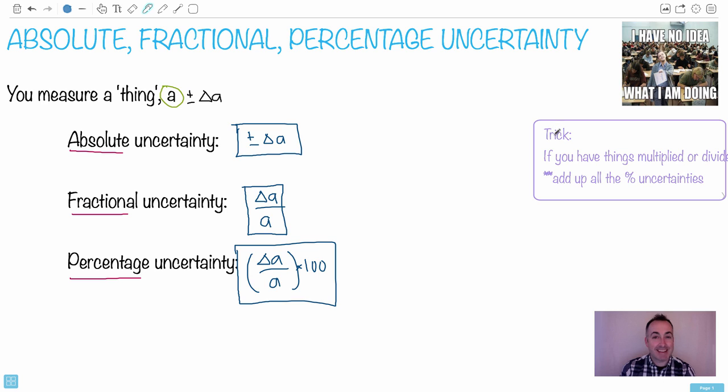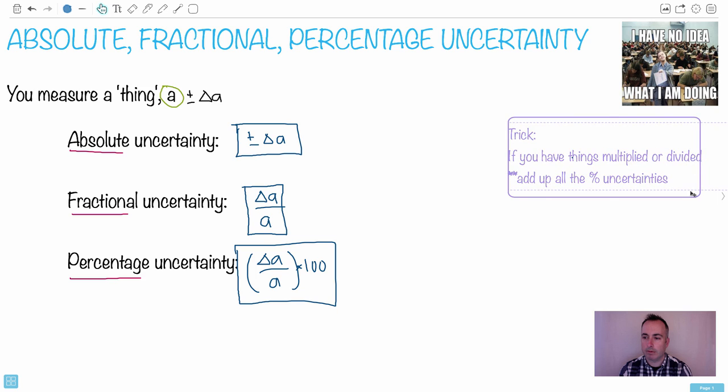So a nice trick is that if you have things multiplied or divided, and when I say things, that could be really a lot of different things. So if you have things that are multiplied or divided, then what you end up doing is you can add up all the uncertainties on whatever value you are measuring.